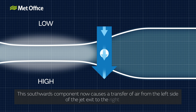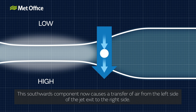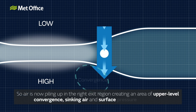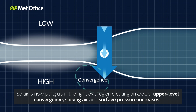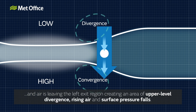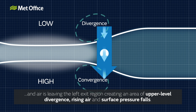This southward component now causes a transfer of air from the left side of the jet exit to the right side. So air is now piling up in the right exit region, creating an area of upper-level convergence, sinking air and surface pressure increases. And air is leaving the left exit region, creating an area of upper-level divergence, rising air and surface pressure falls.